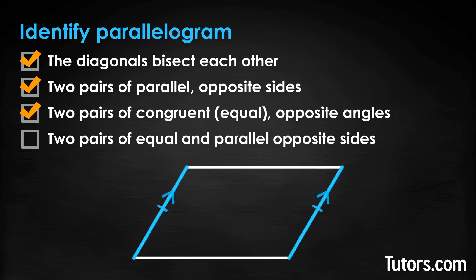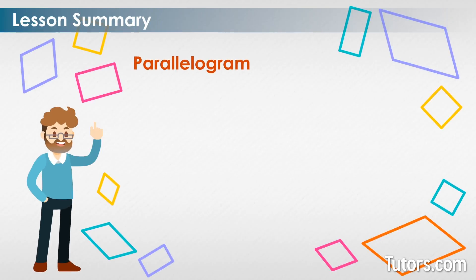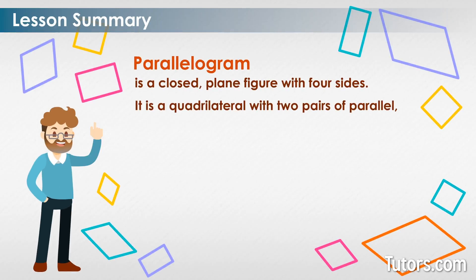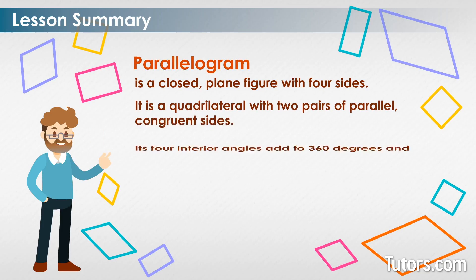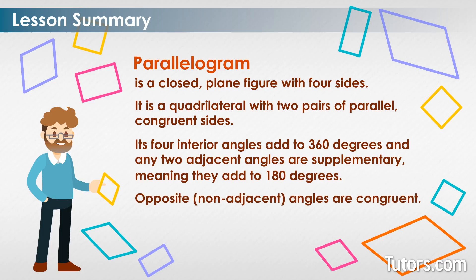In this lesson, you have learned that a parallelogram is a closed plain figure with four sides — a quadrilateral with two pairs of parallel congruent sides. Its four interior angles add to 360 degrees, and any two adjacent angles are supplementary, meaning they add to 180 degrees. Opposite non-adjacent angles are congruent, and the two diagonals of a parallelogram bisect each other.